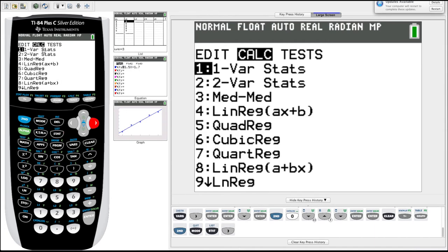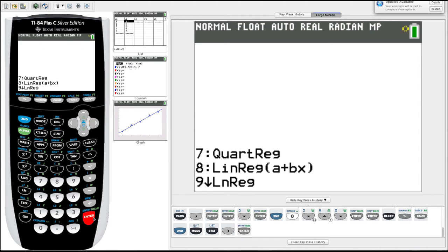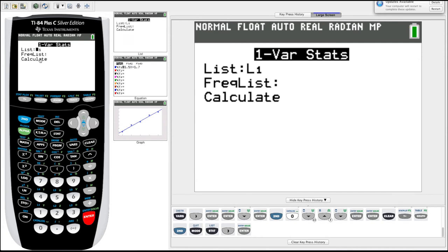We're going to one var stats, one variable statistics. So this will give us statistics on just one column, one list of our data. We hit enter there. Now another menu prompts up which list do you want. List one is default. Let's get data on list two instead. So to get list two, we have to hit second. And down here, you can see in blue above your two button, there's L2. Second two button gives us L2. You can also see there's L3, L4, L5, L6 down here. Frequency list, we skip over. Let's just hit calculate and see what we get.